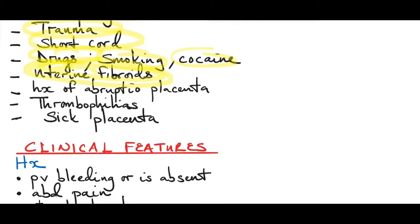Uterine fibroids increase the risk especially if the placenta is implanted directly over a submucosal fibroid. In cases of a septate uterus, the placenta implants over the septum, causing a weak attachment and easy separation. A history of abrupta placenta predisposes patients to abruption in the next pregnancy, with the risk increasing by 0.4 to 4 percent. Thrombophilic disorders like Factor V Leiden deficiency and antiphospholipid syndrome have also been associated with abrupta placenta. A sick placenta caused by any medical condition like diabetes mellitus, hypertension, or cardiac disease has also been associated with abruption due to infarction and necrosis of the placenta.